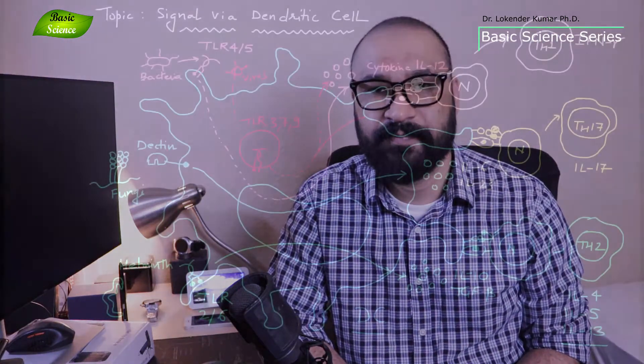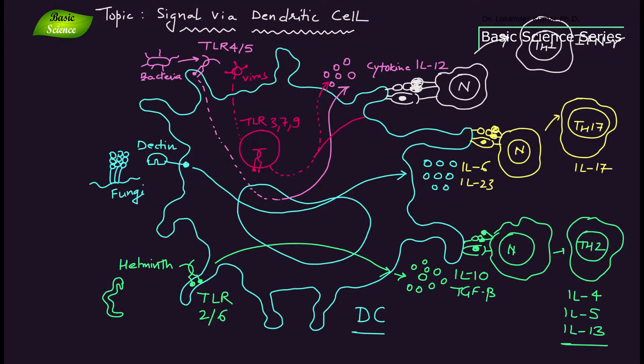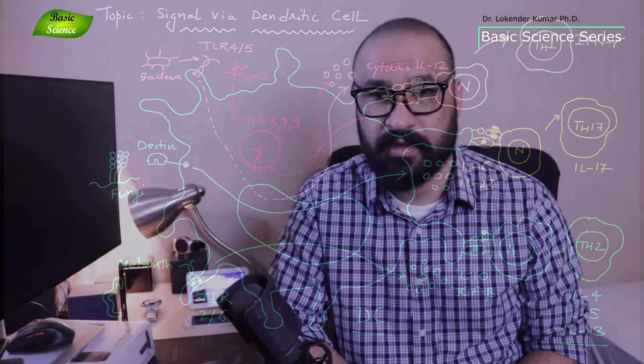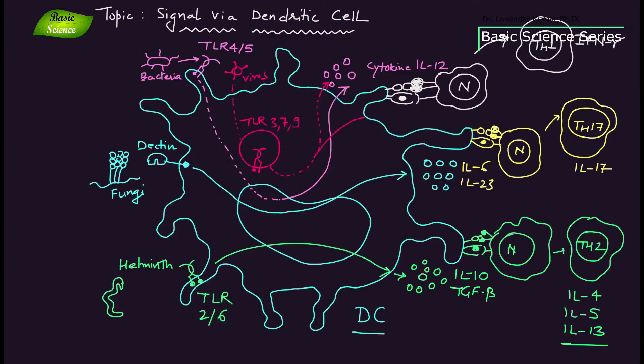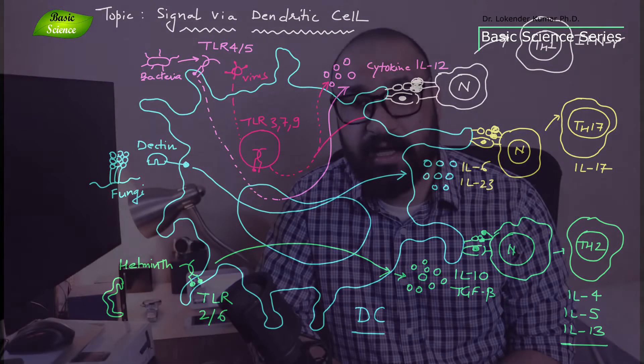In this video we will discuss the functions of dendritic cells — how dendritic cells get activated by bacteria, fungi, and worms, what the cellular signaling mechanism is, and how dendritic cells activate helper T-cells. We will discuss all these important steps one by one, including how toll-like receptors are involved, specifically toll-like receptor 4 and toll-like receptor 5.